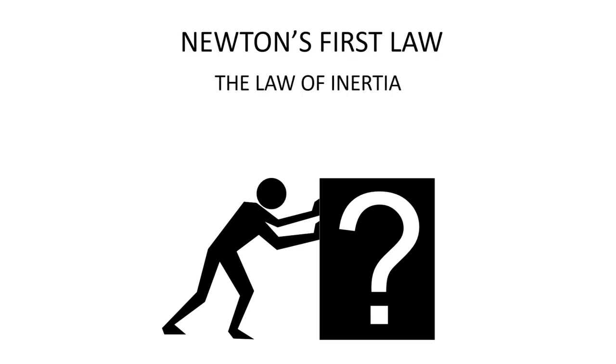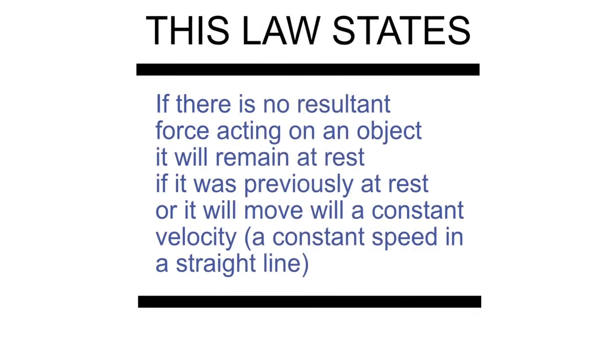Newton's first law, the law of inertia. Inertia is a term we will go into further detail with and explain. What does this law state? Well, if there is no resultant force acting on the object, it will remain at rest if it was previously at rest, or it will continue to move with a constant velocity. What is a constant velocity? Well, a constant velocity is uniform motion. That is motion in a straight line at a constant speed.